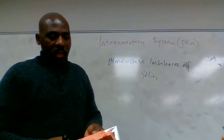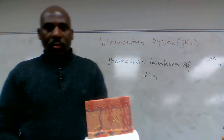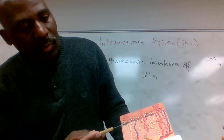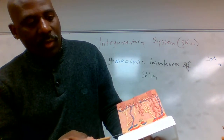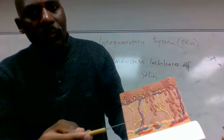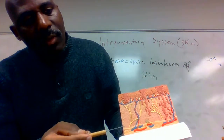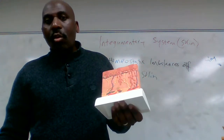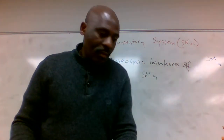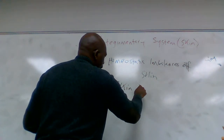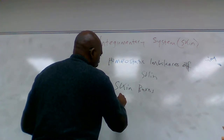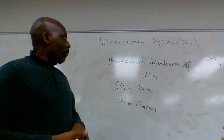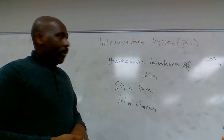We already know that the skin has three layers: the epidermis, dermis, and hypodermis. Two main common homeostatic imbalances of the skin are skin burns and skin cancers. In terms of skin burns, we have first degree, second degree, and third degree burns.